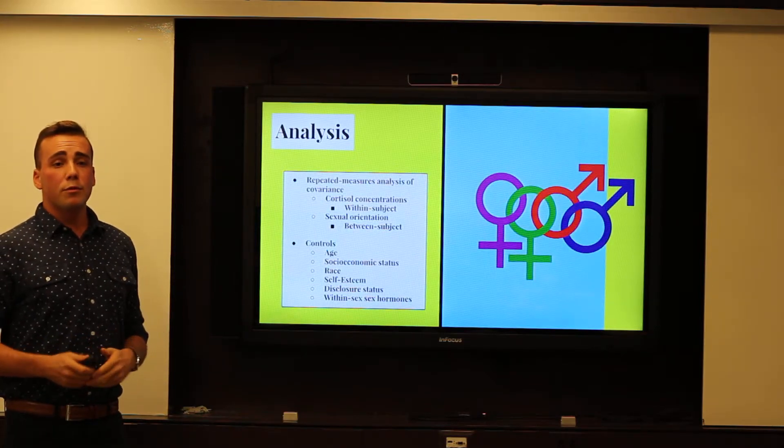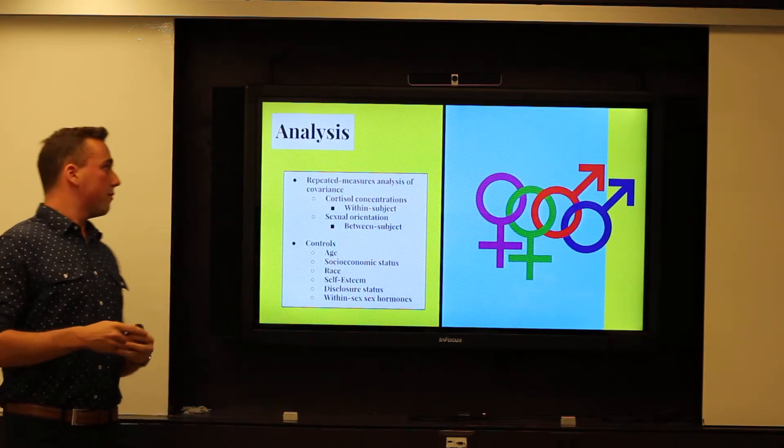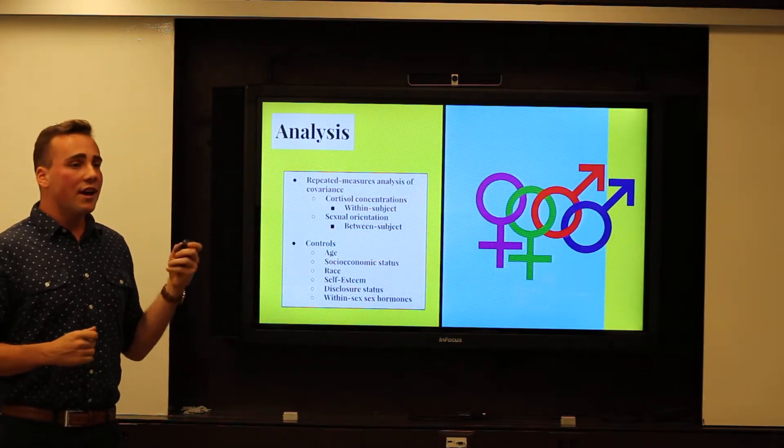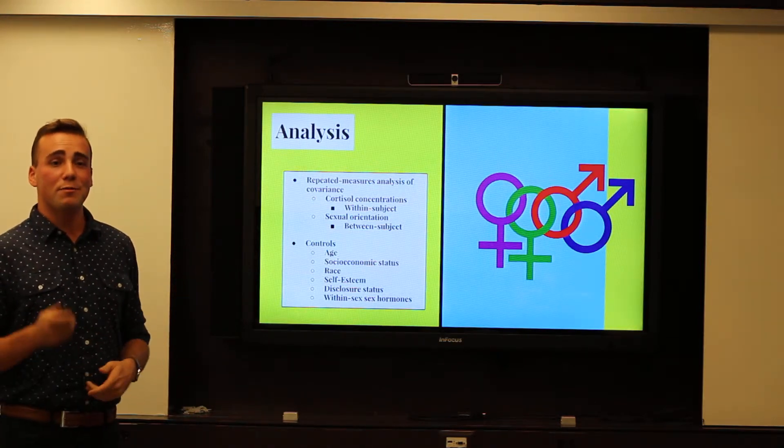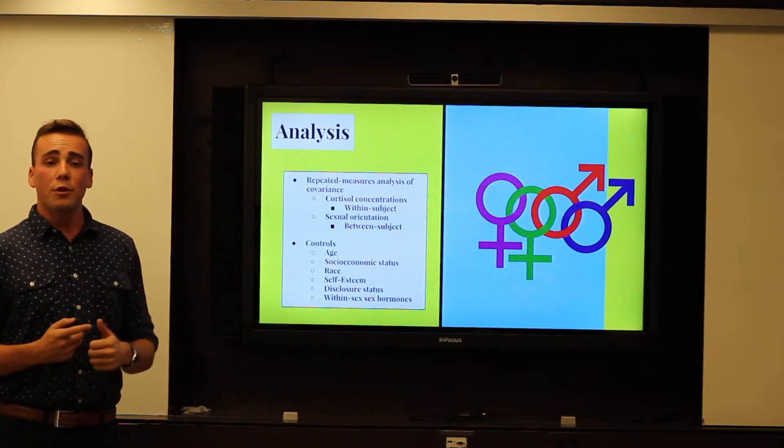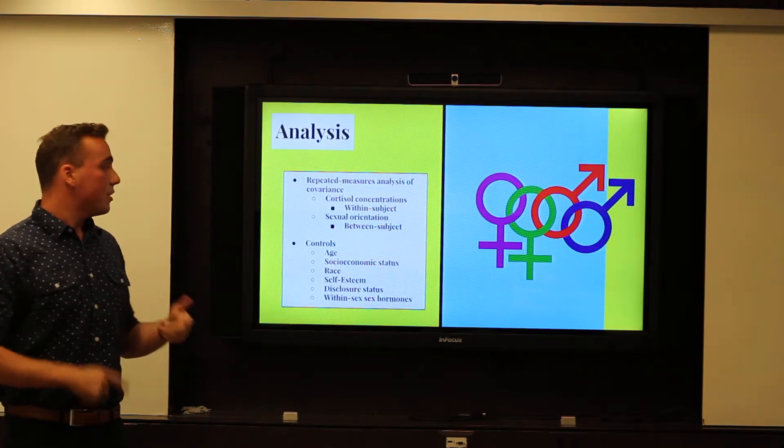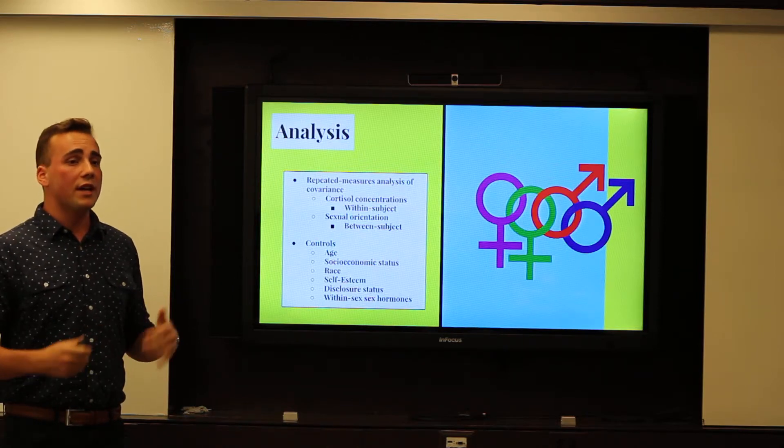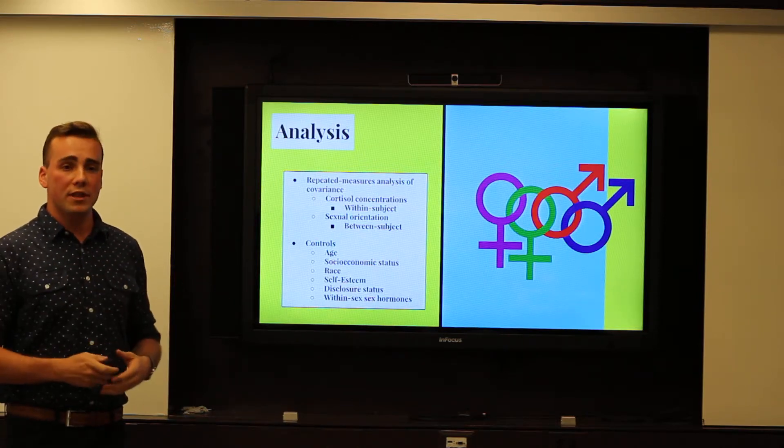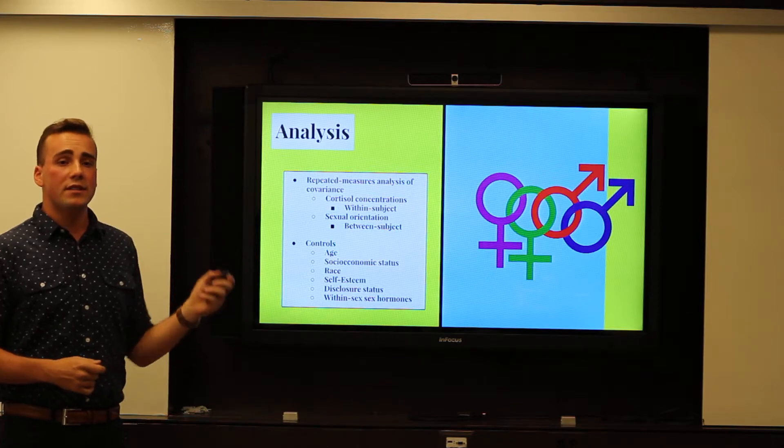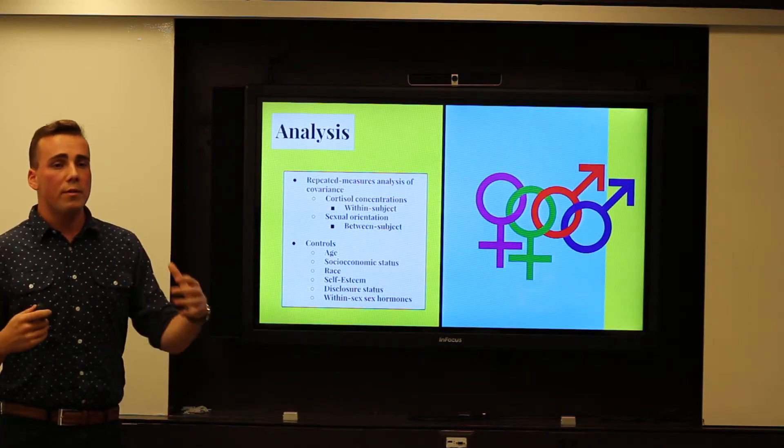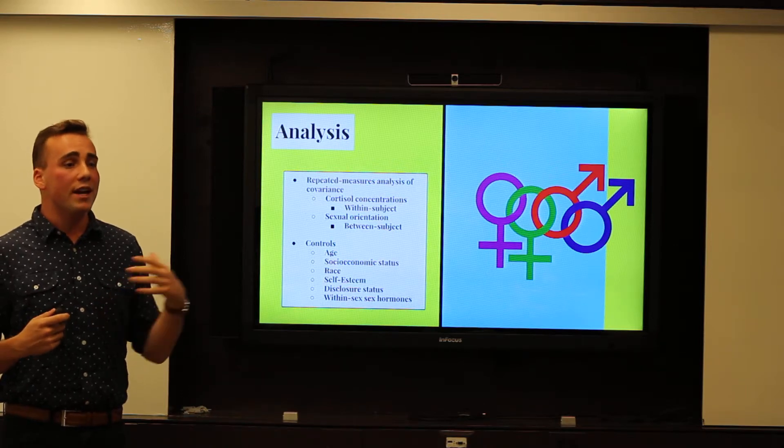So the researchers performed repeated measures analysis of covariance with cortisol concentrations as within-subject factors and sexual orientations as between-subject factors. And they controlled for things like race, age, socioeconomic status, self-esteem measures, disclosure status, which is how out one is to their community about their sexual identity, and then within-sex, sex hormones. That means in men they controlled for testosterone, and in women they controlled for progesterone and estradiol levels.